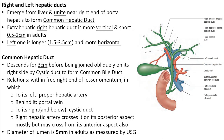The common hepatic duct is about 3 centimeters long with a luminal diameter of roughly 5 millimeters as measured by ultrasonography. The cystic duct unites with it to form the common bile duct. The common hepatic duct lies in the upper part of the right free margin of the lesser omentum, alongside the proper hepatic artery and the portal vein.